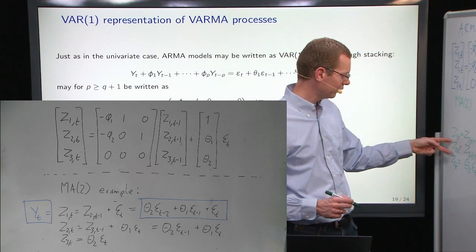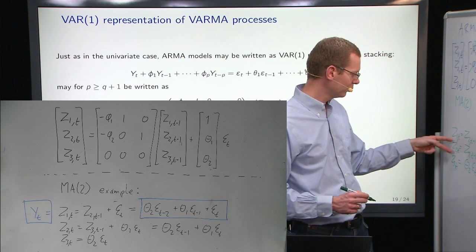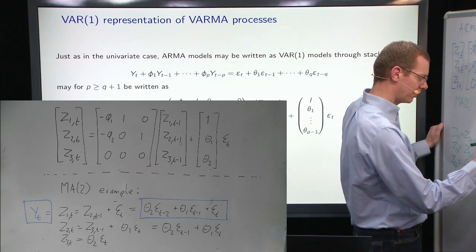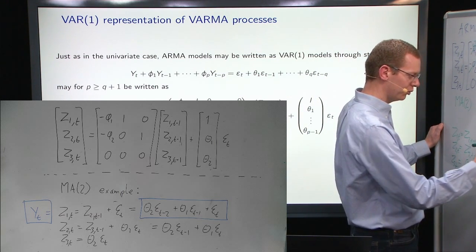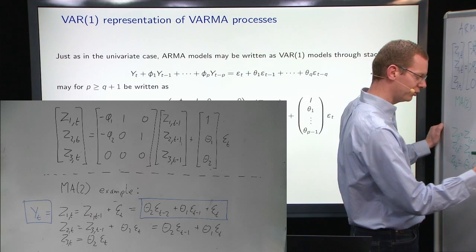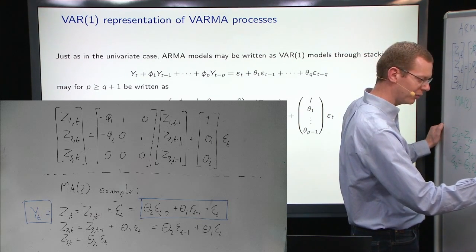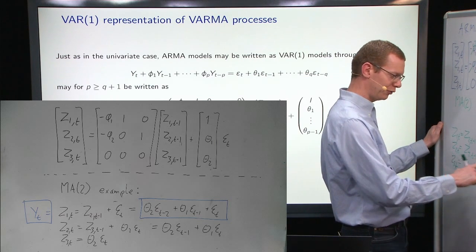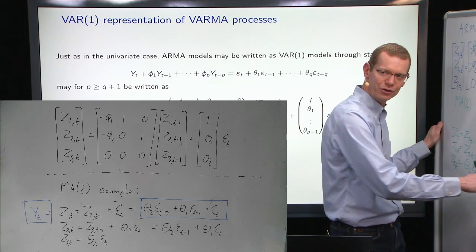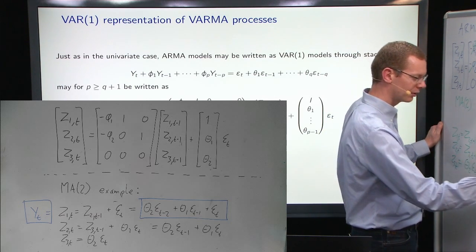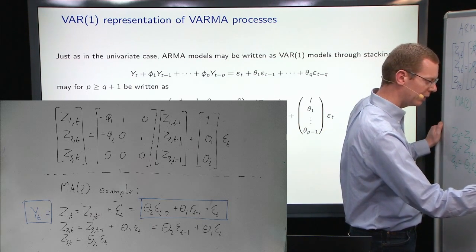And if we do the same as we did just before, now we take z2,t and shift time and plug that in. Theta 2 epsilon t minus 2 plus theta 1 epsilon t minus 1. So, that's shifting what we have for z2 down here, 1 time backwards in time plus epsilon t.